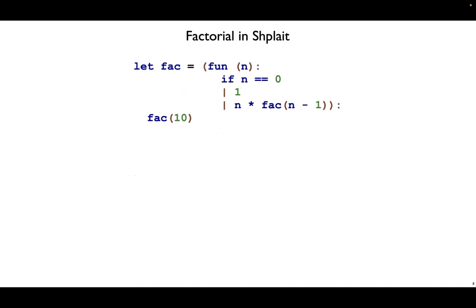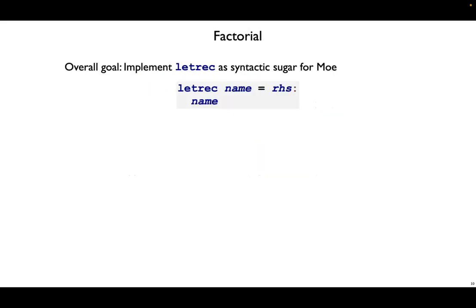What we do have right now in lambda calculus is let, and with let alone, we can't encode recursion. This doesn't work because the fac here is only bound inside the body. It's not bound on the right-hand side. So this is our goal: implement letrec, and we're going to do it as syntactic sugar for Moe.